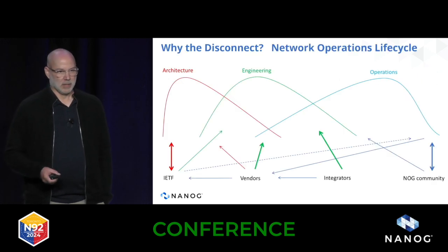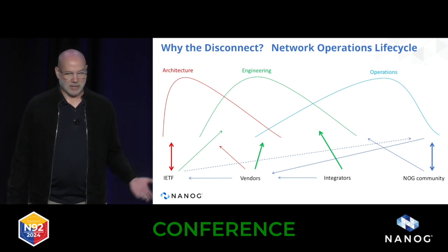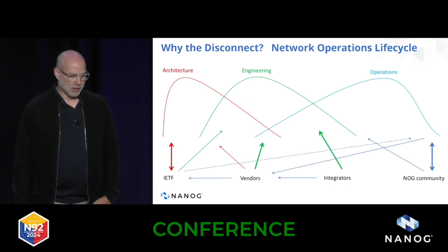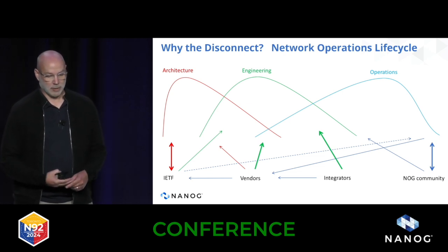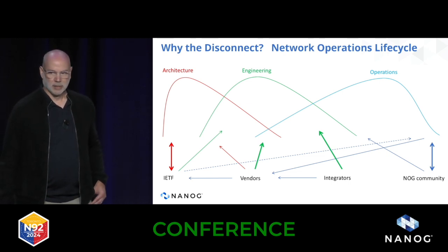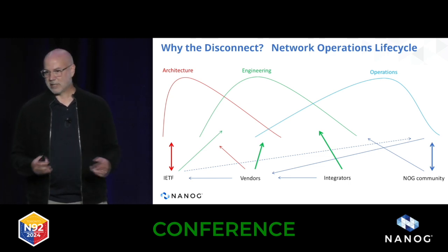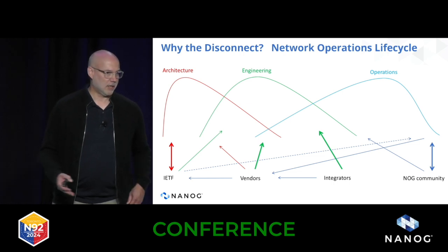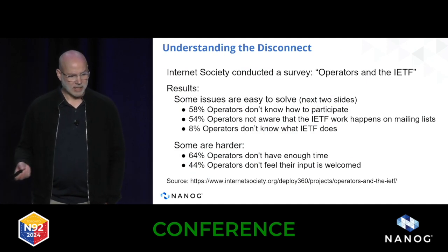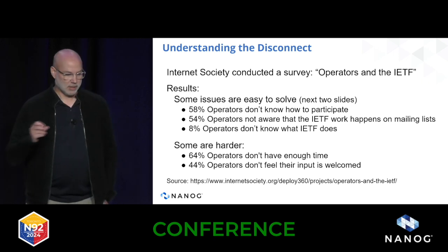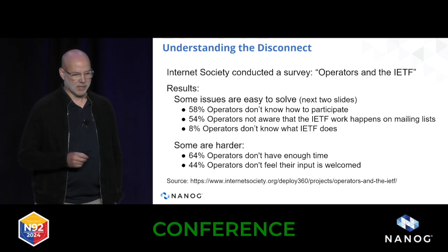So why the disconnect? On screen are three major phases of the network operations lifecycle: the architecture phase, the engineering phase, and the operations phase. The IETF contributes strongly to the engineering phase, while network operator groups like NANOG are consuming and maintaining these technologies in the operations phase. The problem is a long time delay between these two phases, sometimes measured in decades. To understand this disconnect, the Internet Society — which the IAB reports up to — conducted a survey called 'Operators and the IETF.'